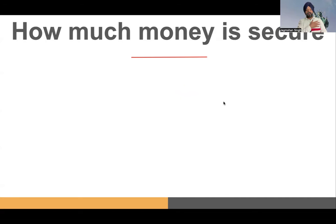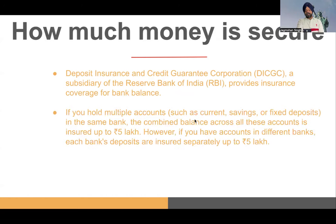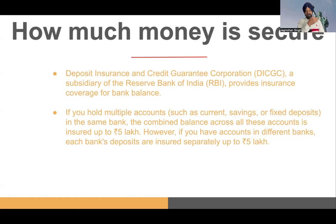Another important point: when I say you should have accounts in more than one bank, there's a beautiful benefit. DICGC — Deposit Insurance and Credit Guarantee Corporation, a subsidiary of Reserve Bank of India with Government of India guarantee — states that if money is in any bank, whether current account, savings account, or fixed deposit, and that bank fails tomorrow, there is an insurance of up to 5 lakh rupees. If you have money in two different banks, that's 5 lakhs from the first and 5 lakhs from the second.